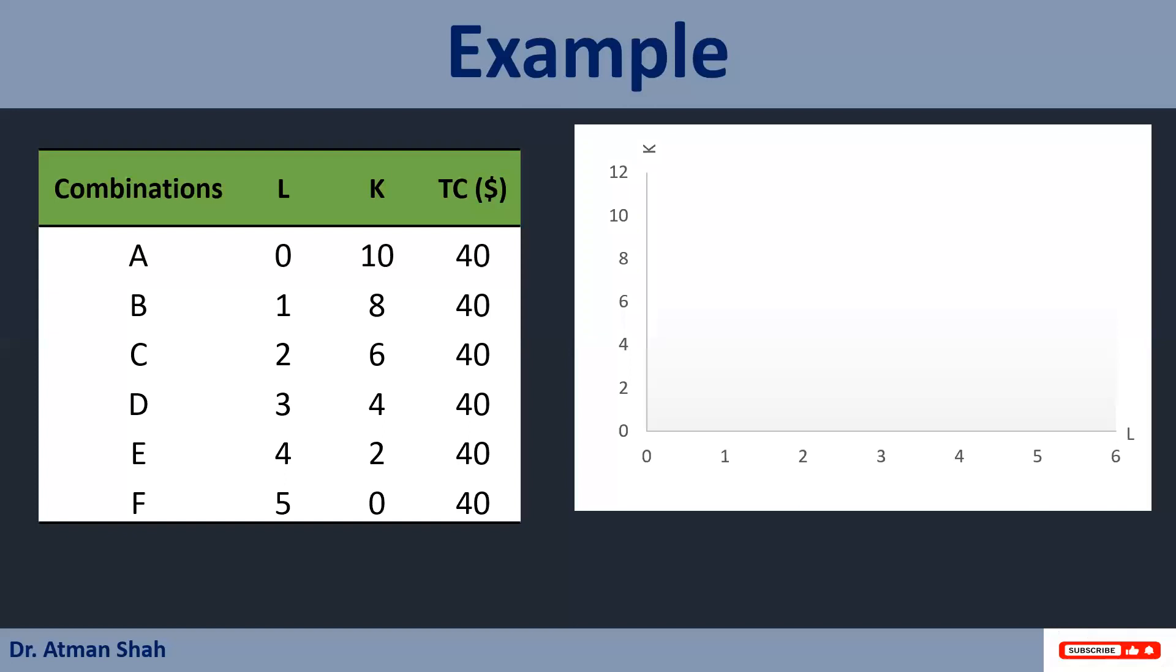See this diagram. On horizontal axis, we have labor units. On vertical axis, we have capital units. So first we have combination A, zero labor and 10 units of capital. Then we have combination B, one labor, eight capital units. Combination C, two units of labor, six units of capital.